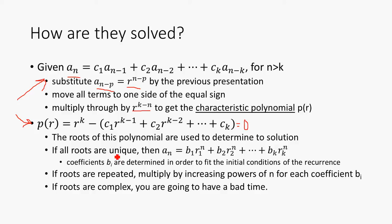So if the roots are unique, then the solution takes the form a_n equals b1*r1^n plus b2*r2^n and so on up to the kth term, where b_i are coefficients, also constant, that are determined according to the initial conditions.